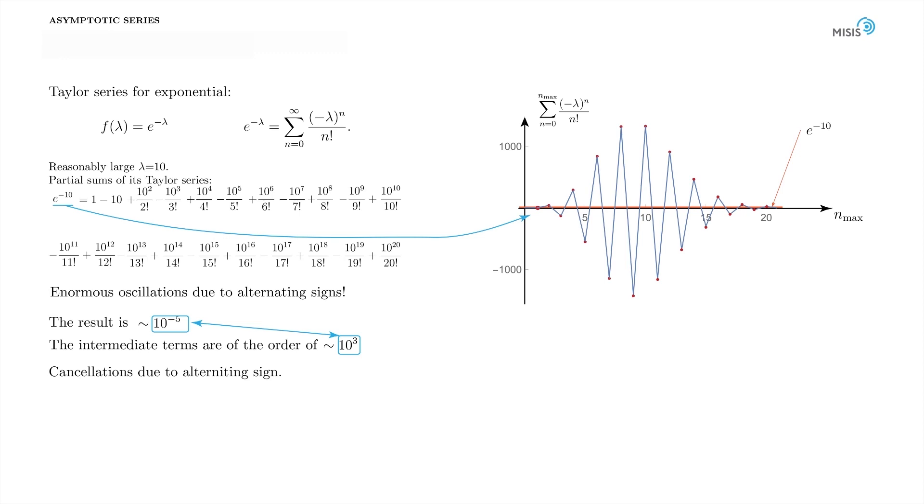Comparing the orders of the result and the order of intermediate terms, we conclude: to get the normal accuracy for e to minus 10 from the Taylor series, we need first to keep a significant digits in the process of computation, second at least 20 terms of the series. And this is just e to minus 10. Imagine what is going to happen for e to minus 20, for example.